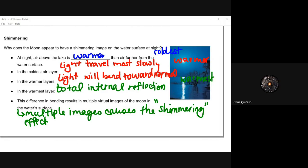And then in the warmest layer, total internal reflection occurs. The difference in bending results in multiple virtual images of the moon along the water surface, creating that shimmering effect.